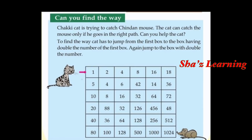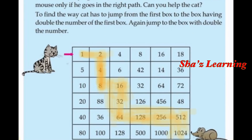Are you ready? Look at this picture. 1, 2 — 2 in the double is 4. 4 in the double is 8. 8 in the double is 16. Then 32. Then 64. 64 in the double is 128. Then 256. Then 512. Then 1024.